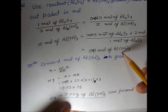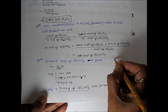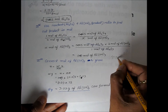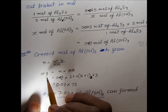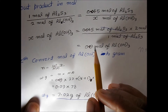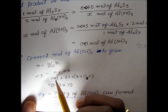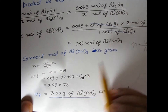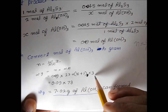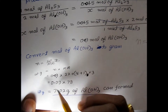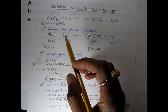Now we convert from moles to grams. Grams = moles × molar mass. The molar mass of Al(OH)₃ is 27 + (16 + 1) × 3 = 27 + 51 = 78 g/mol. So grams of aluminum hydroxide = 0.09 × 78 = 7.02 grams. Therefore, 7.02 grams of aluminum hydroxide will form in this reaction.